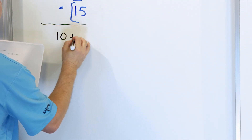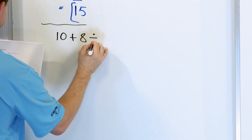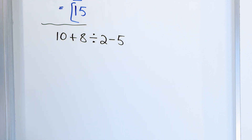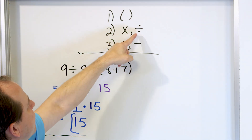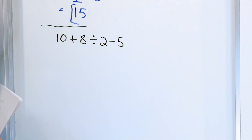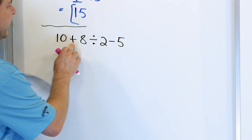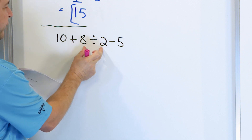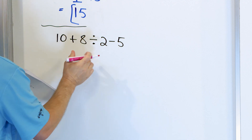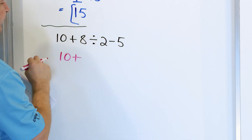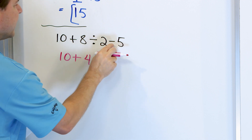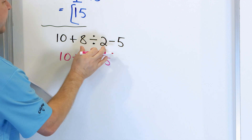Let's take a look at problem number 2: 10 plus 8 divided by 2 minus 5. First thing we check — do we have any parentheses? We don't, so the next thing we do is look for any multiplications or divisions. We must do them all first. We have addition here and subtraction here — those will come later. We must do the division first, even though it's in the middle. 8 divided by 2 is 4, and the minus 5 stays for later.